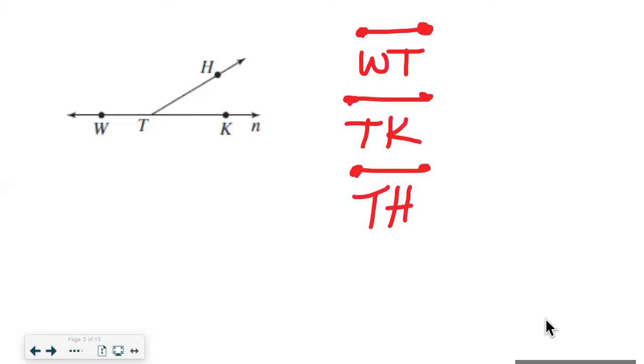It doesn't have to be consecutive points. So we could then take part of this line from W to K and call that a line segment also. It doesn't have to be the next point over. It's just part of the line, whatever slice of the line that you're indicating.